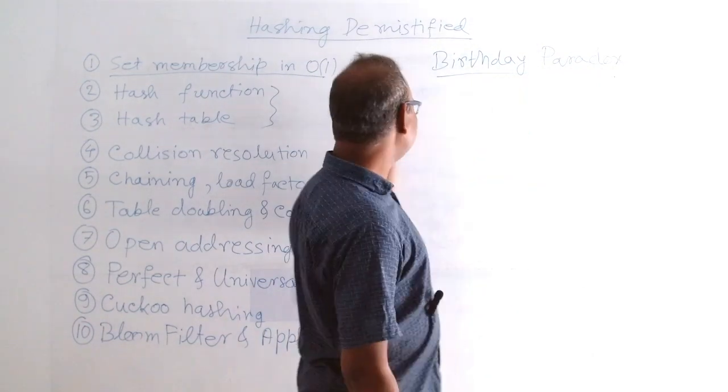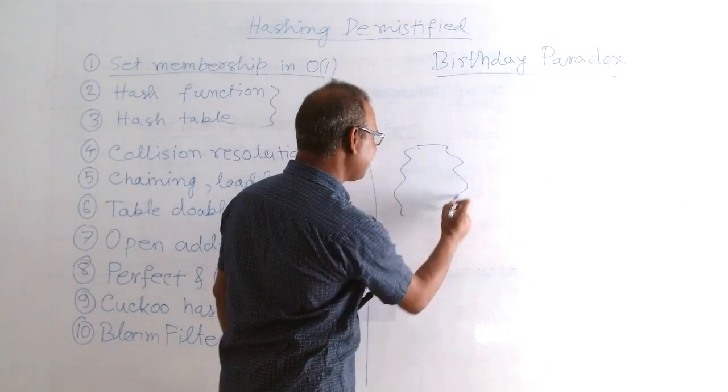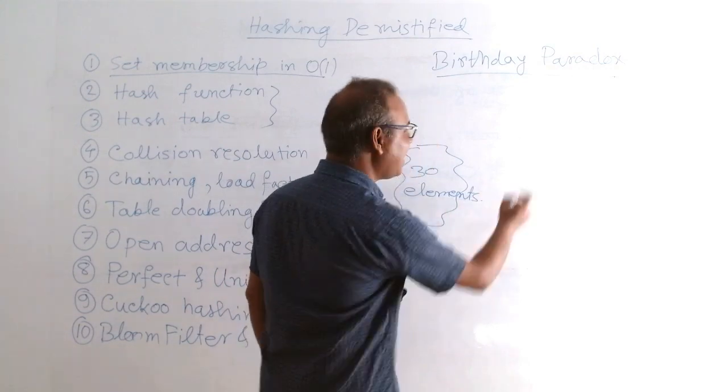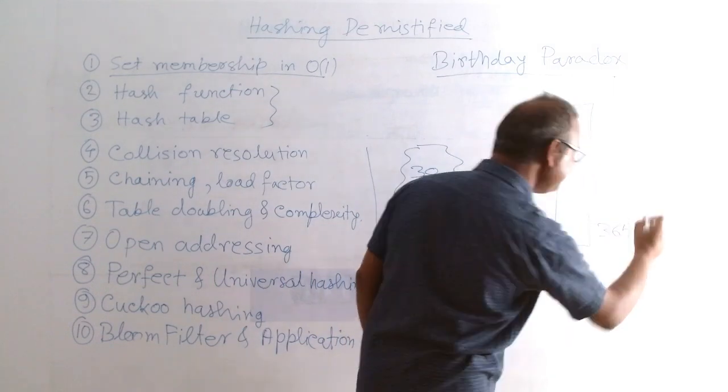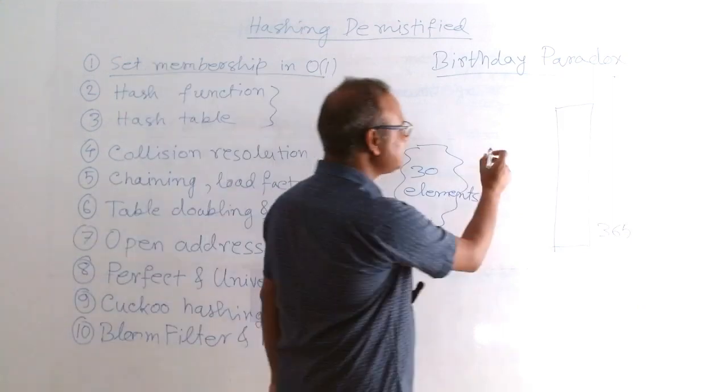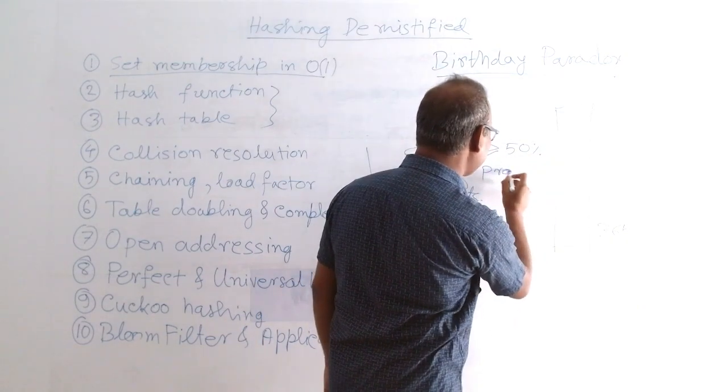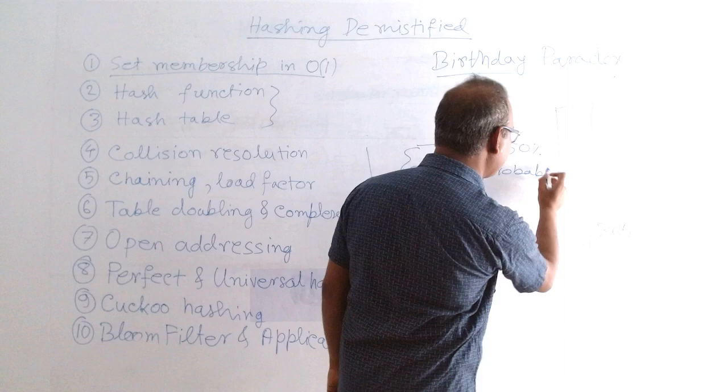So what does it mean with respect to this context of hashing? It means if we are taking a set of 30 elements and our table size is 365, then there is more than 50% probability of collision.